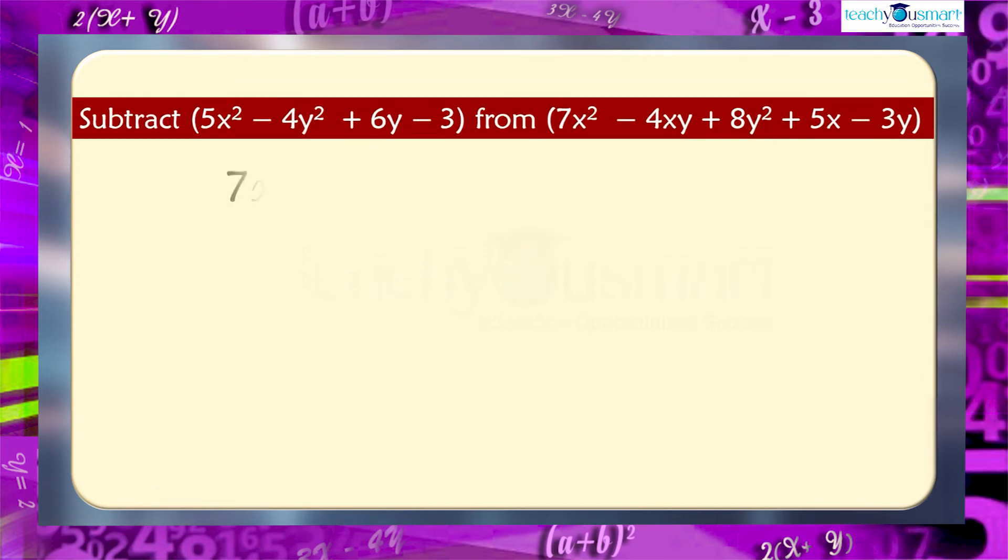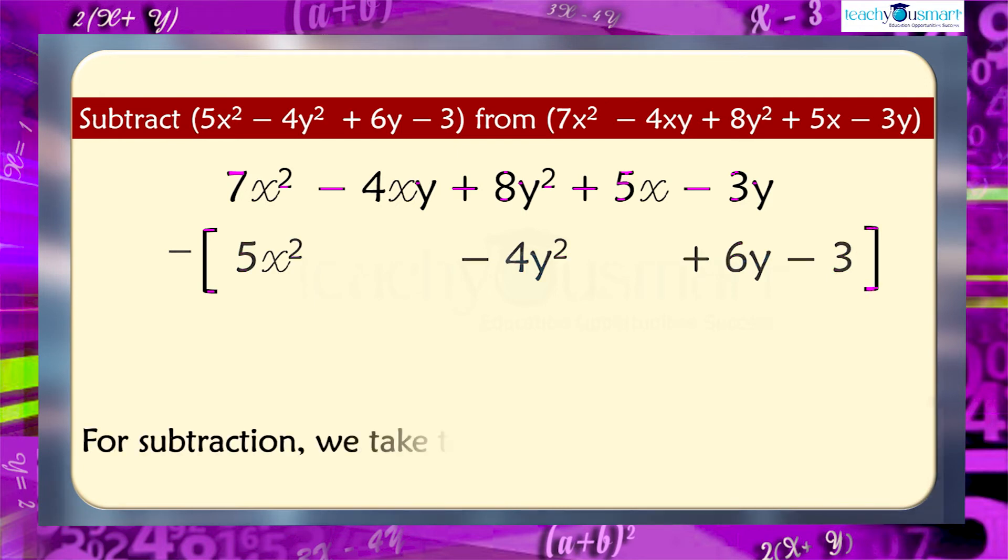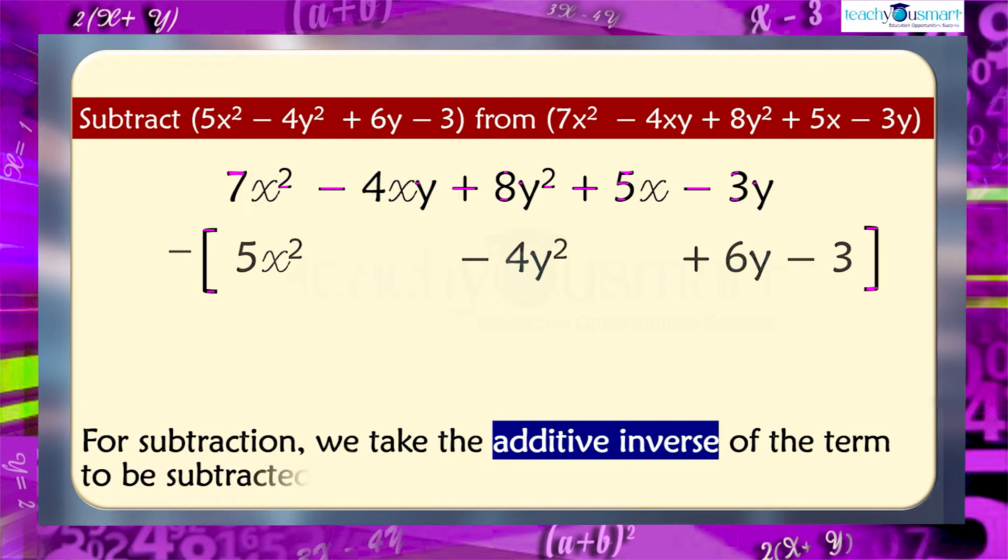That is, 7x square minus 4xy plus 8y square plus 5x minus 3y minus 5x square minus 4y square plus 6y minus 3. For subtraction, we take the additive inverse of the term to be subtracted and add them.